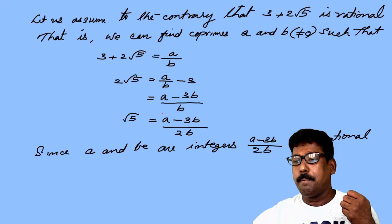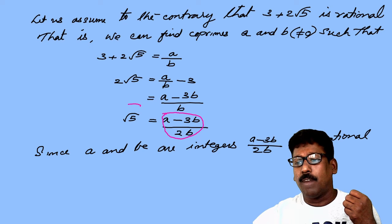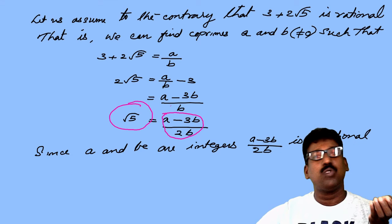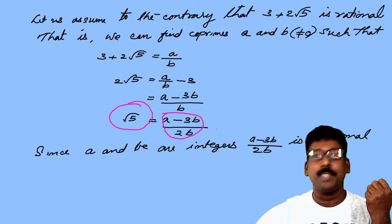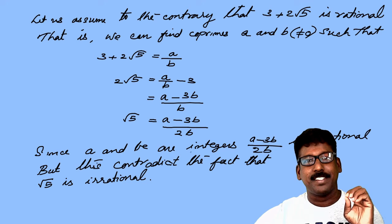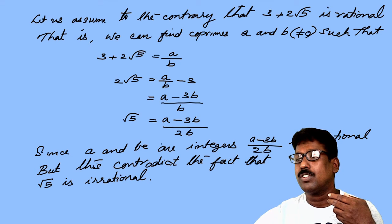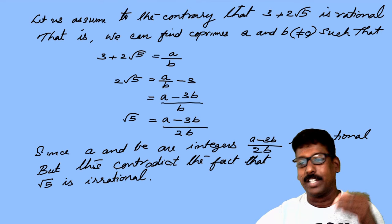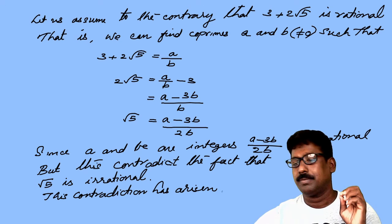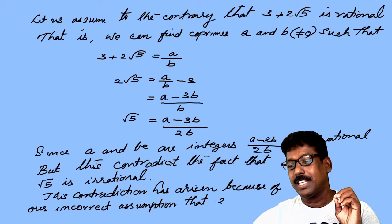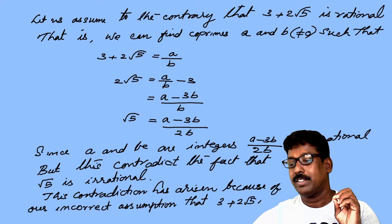Since a and b are integers, a minus 3b by 2b is rational — because it is in the form of p by q, it is rational. But what about root 5? Yesterday we proved root 5 is irrational. But an irrational number is equal to a rational number — that is a contradiction. So next step we can write: this contradicts the fact that root 5 is irrational. This contradiction has arisen because of our incorrect assumption that 3 plus 2 root 5 is rational.